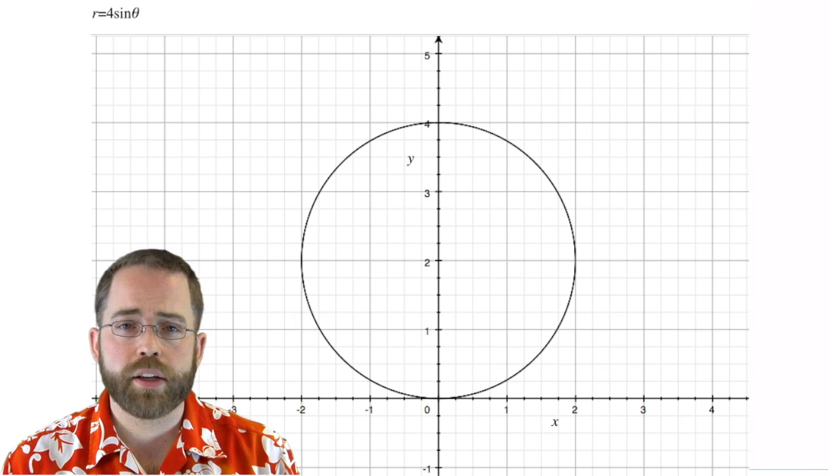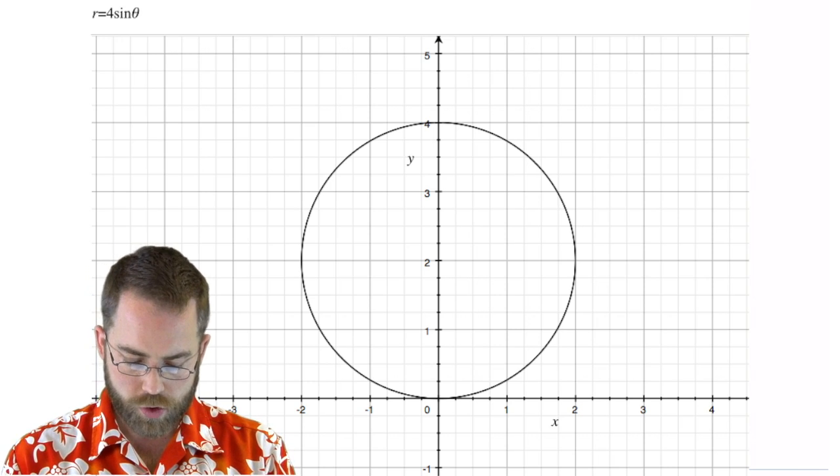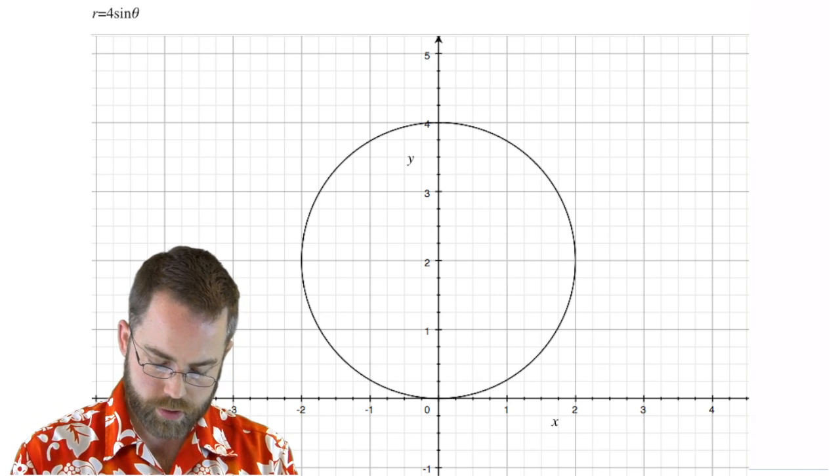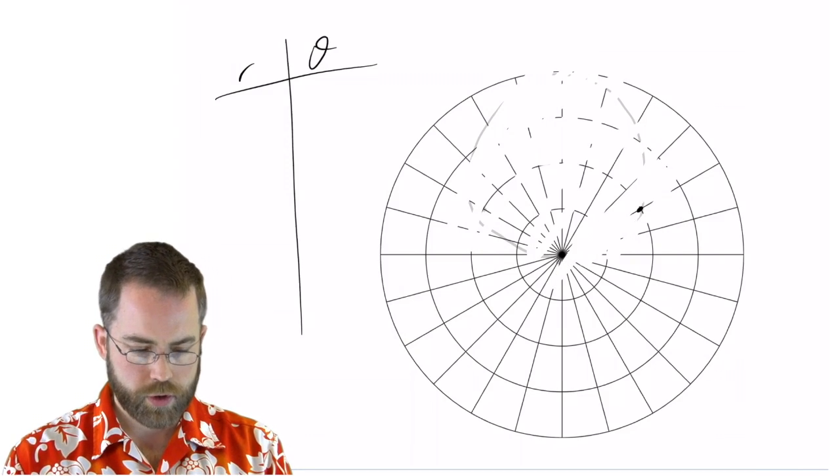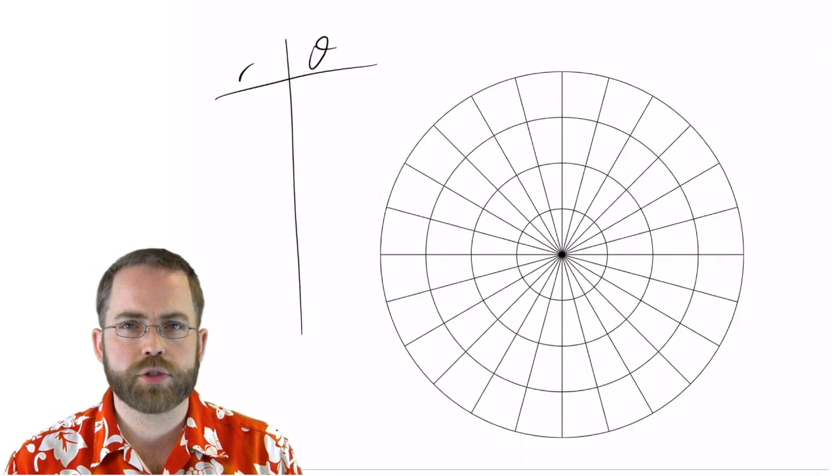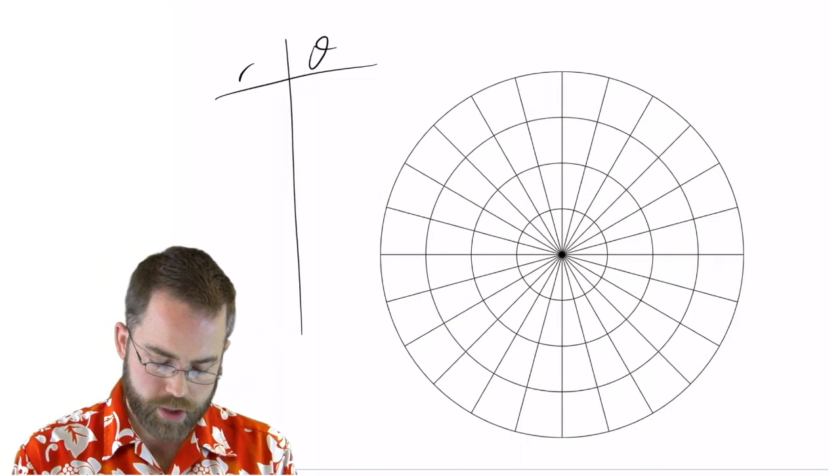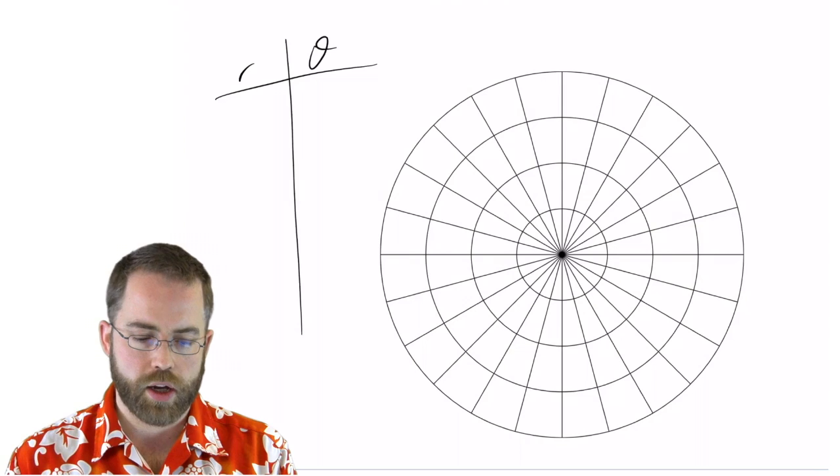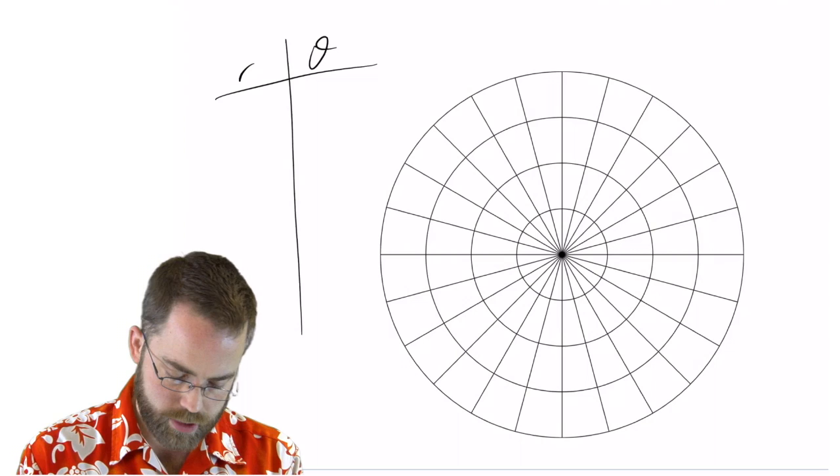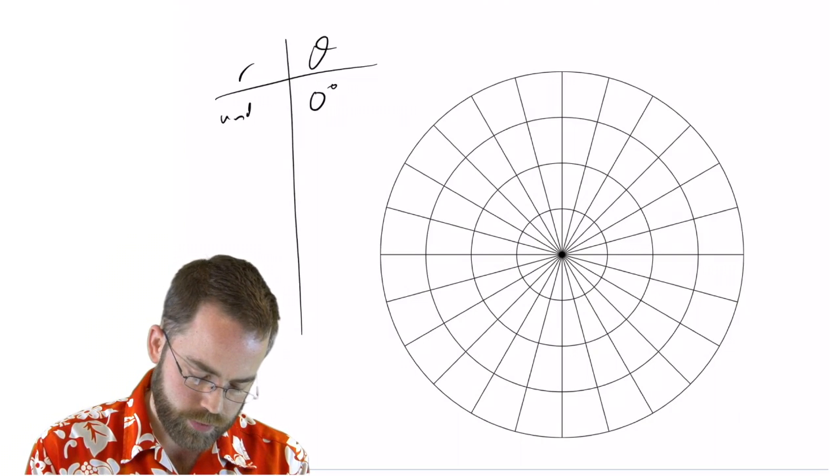All right. So you can put that in your calculator and then double check yourself. It's a circle. What about cosecant? What about r equals 2 cosecant theta? Well, cosecant is just 1 over sine. So again, I'm going to use the nice numbers that I know for sine. Well, at 0, then 1 over 0. Oh, shoot. That's undefined. So that won't work.